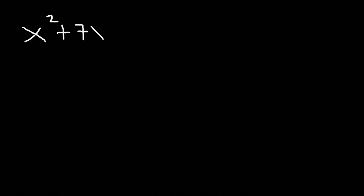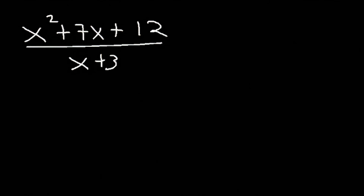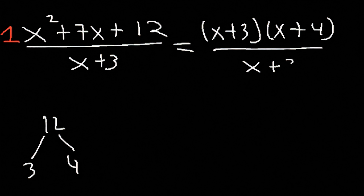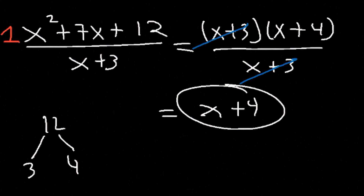Now what about dividing polynomials? Let's say we wish to divide x squared plus 7x plus 12 by x plus 3. There are three things you can do: factor, use long division, or use synthetic division. Let's divide by factoring. To factor the trinomial, we need two numbers that multiply to 12 but add to 7. 3 times 4 is 12 and 3 plus 4 is 7. So we factor it as x plus 3 times x plus 4. We can cancel the x plus 3 terms, leaving x plus 4. So x squared plus 7x plus 12 divided by x plus 3 is x plus 4.